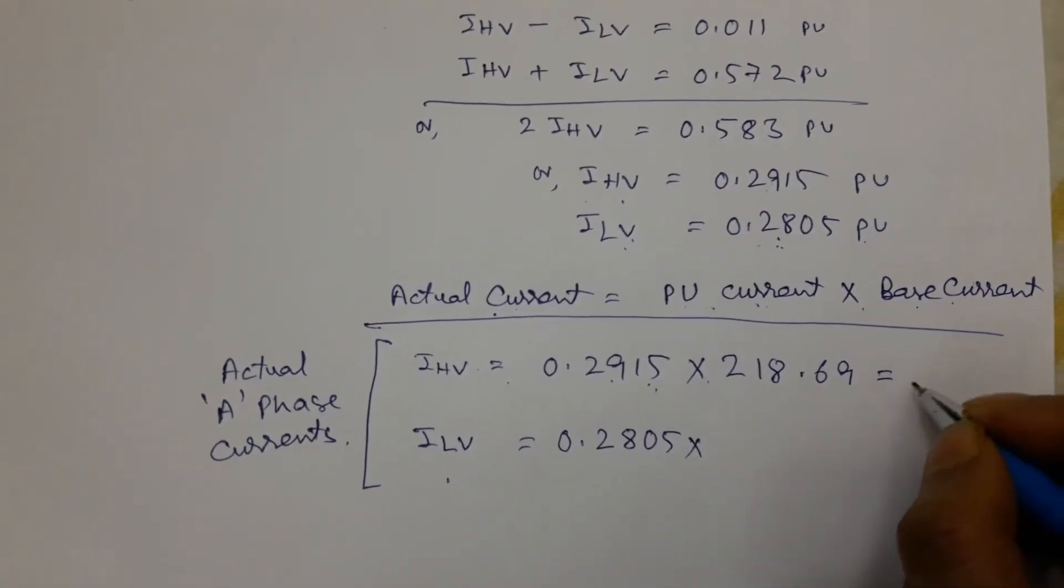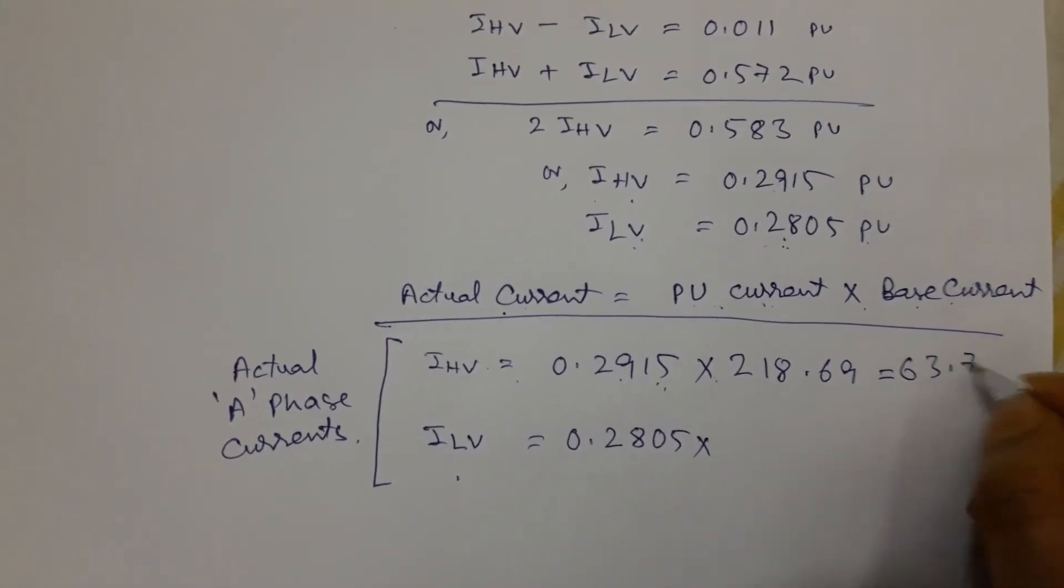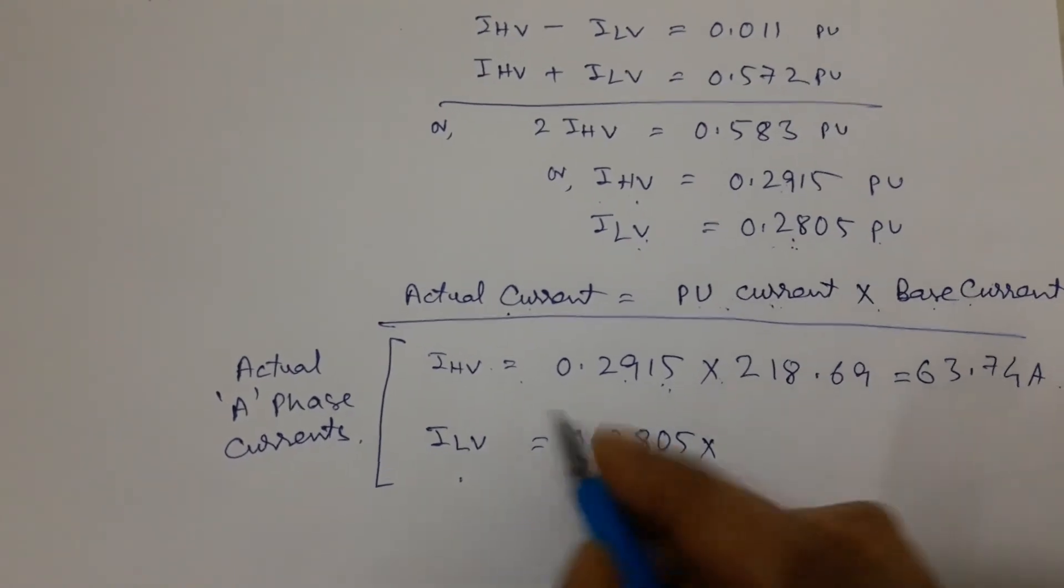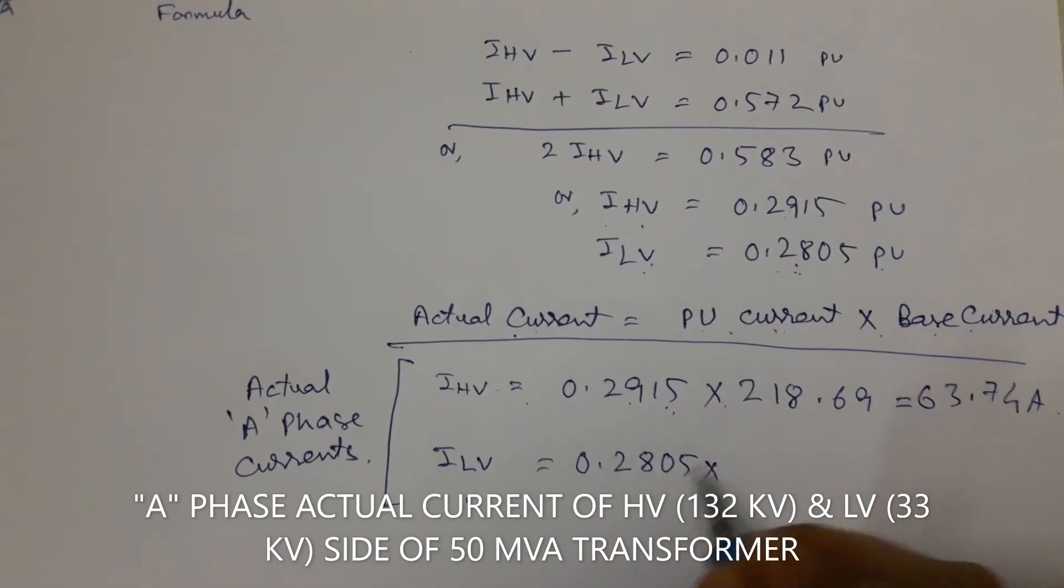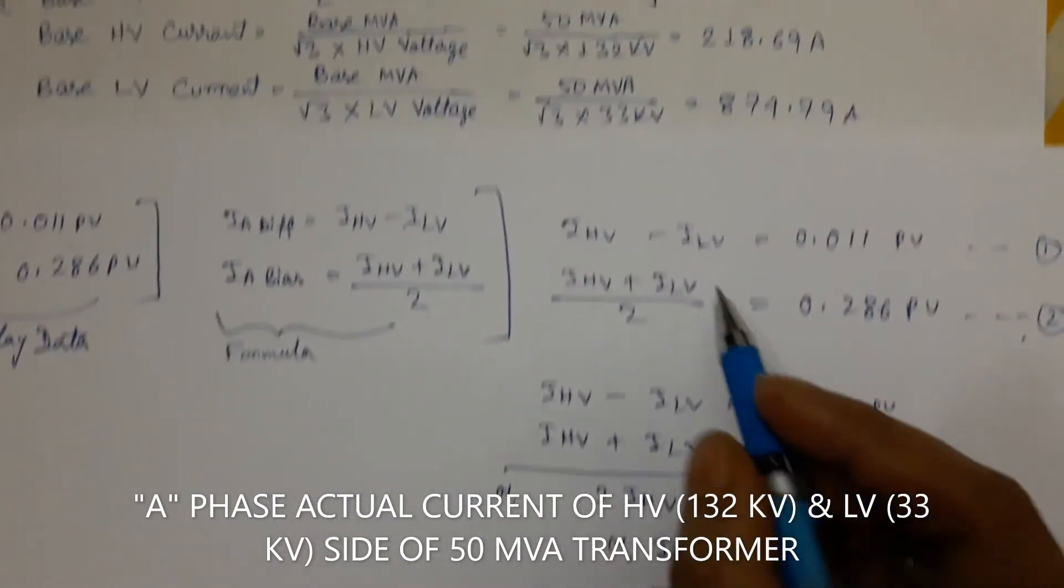We get about 63.74 ampere, which is HV side current of A phase. And LV side base current we have already calculated, and that is 874 ampere.